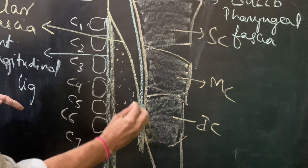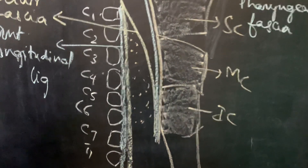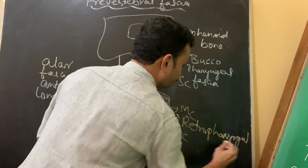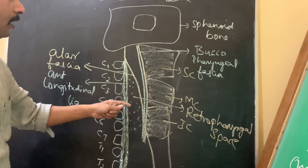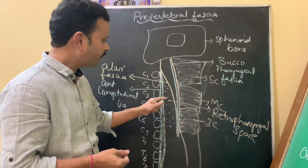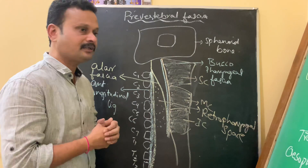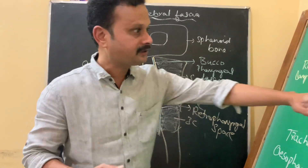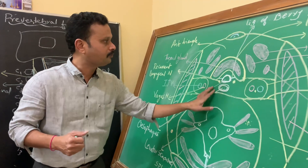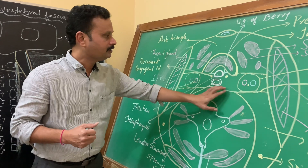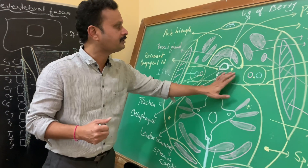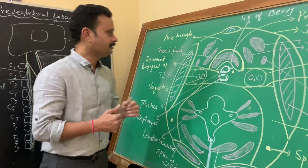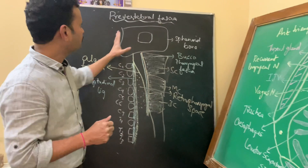The space between the alar fascia and the buccopharyngeal fascia is the retropharyngeal space, containing the pharyngeal plexus of nerves, some vessels, and fat. When this space is infected and a retropharyngeal abscess occurs, the pus may compress the pharynx anteriorly, and the bulging may extend towards the visceral compartment. So this is, in brief, the topic of pre-vertebral fascia.